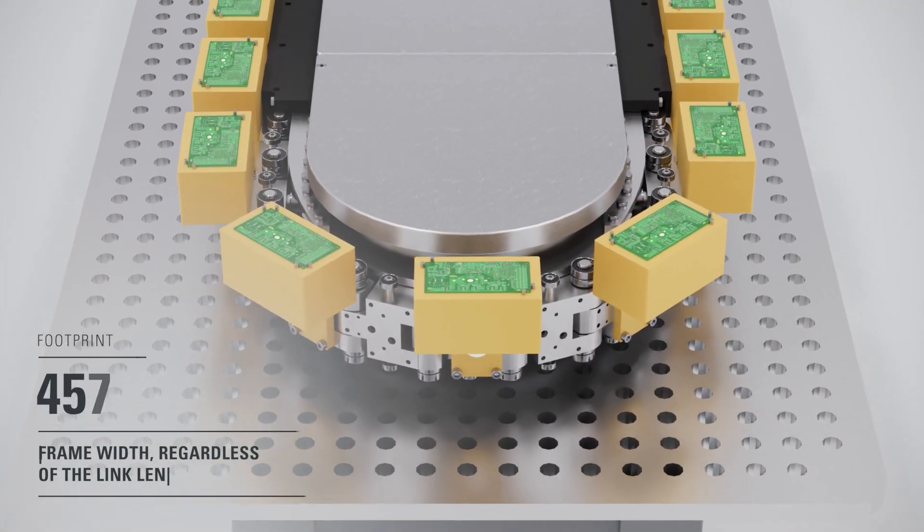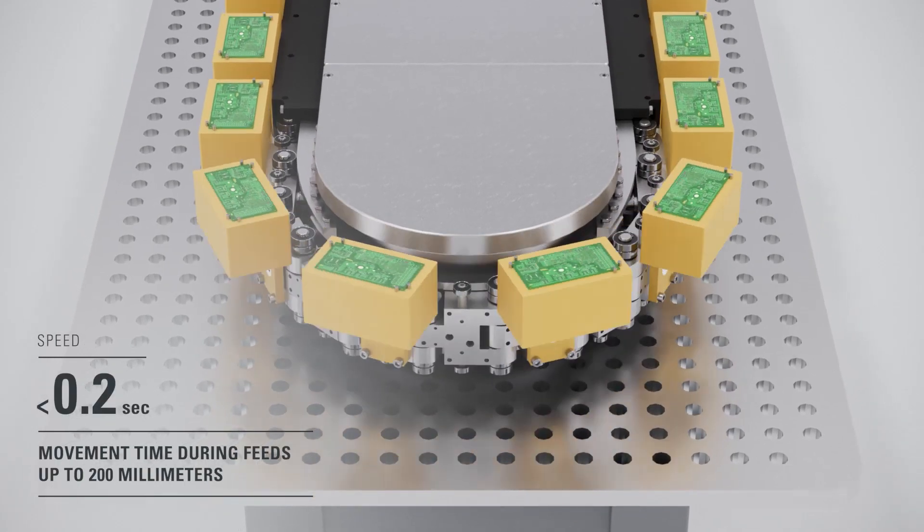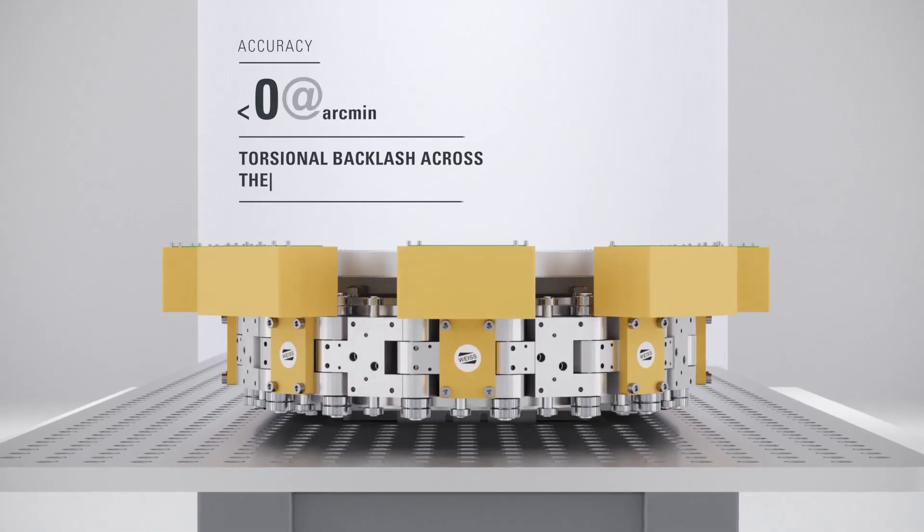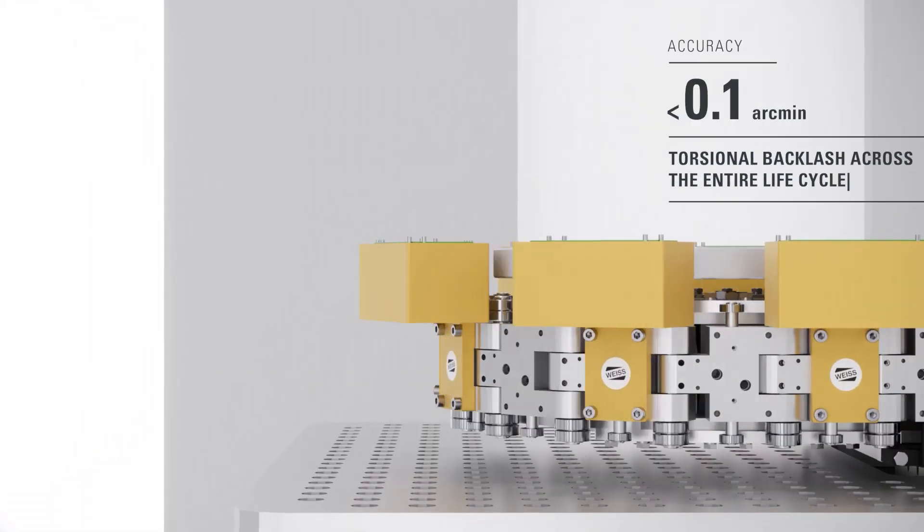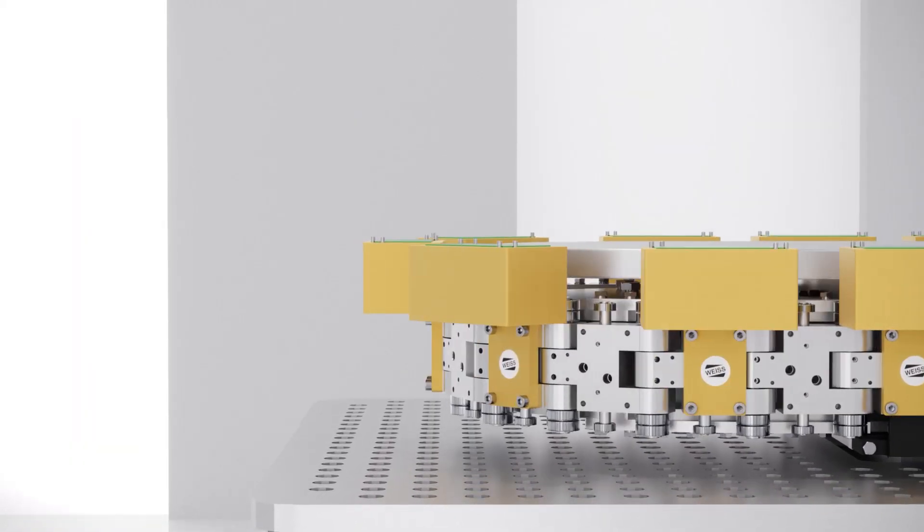The cycle rate per component is extremely low, and the link conveyor system is designed for a high level of accuracy. This accuracy is maintained throughout the entire lifecycle.